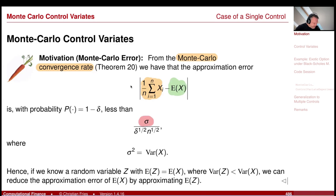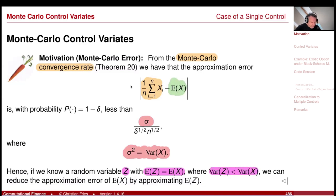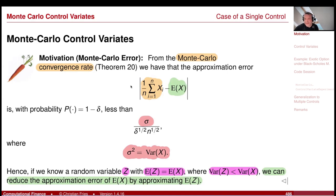This means: if you can reduce the variance of the random variable for which you would like to calculate the expectation, you can reduce the Monte Carlo error. In this bound, sigma squared is the variance of x. So if we know a random variable that has the same expectation as x but a smaller variance, then we should do the Monte Carlo approximation for that random variable z.